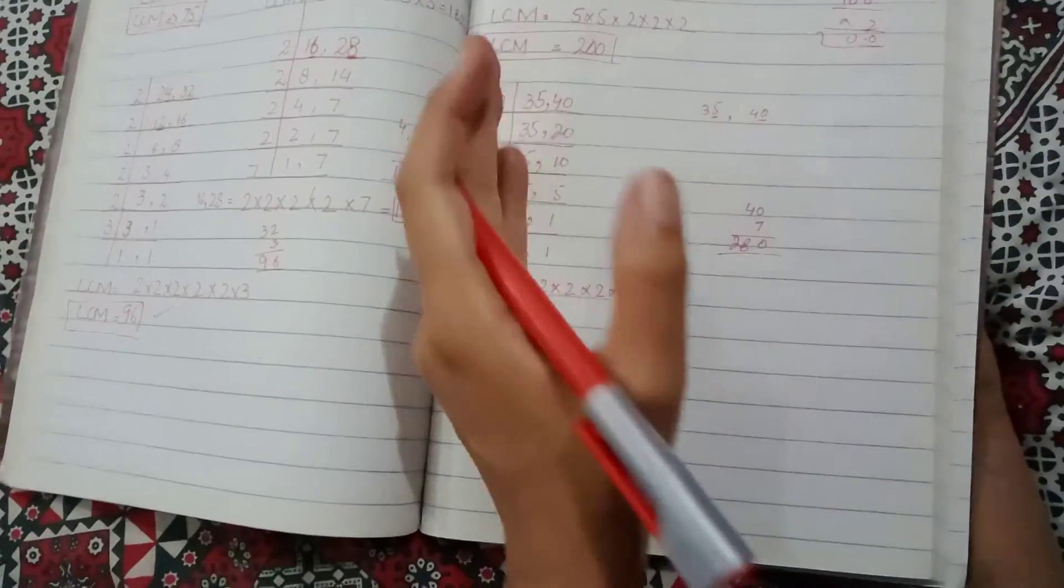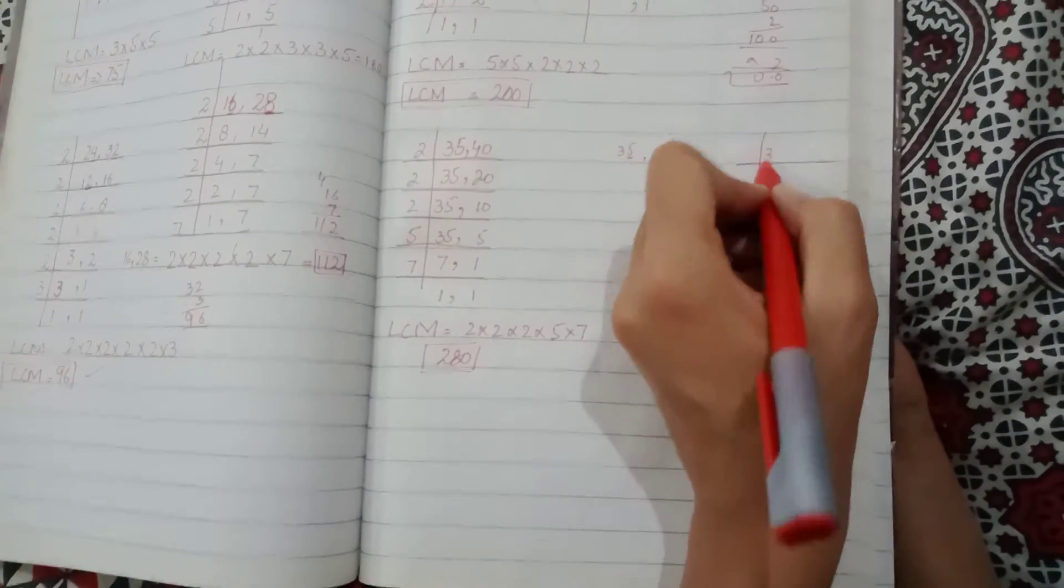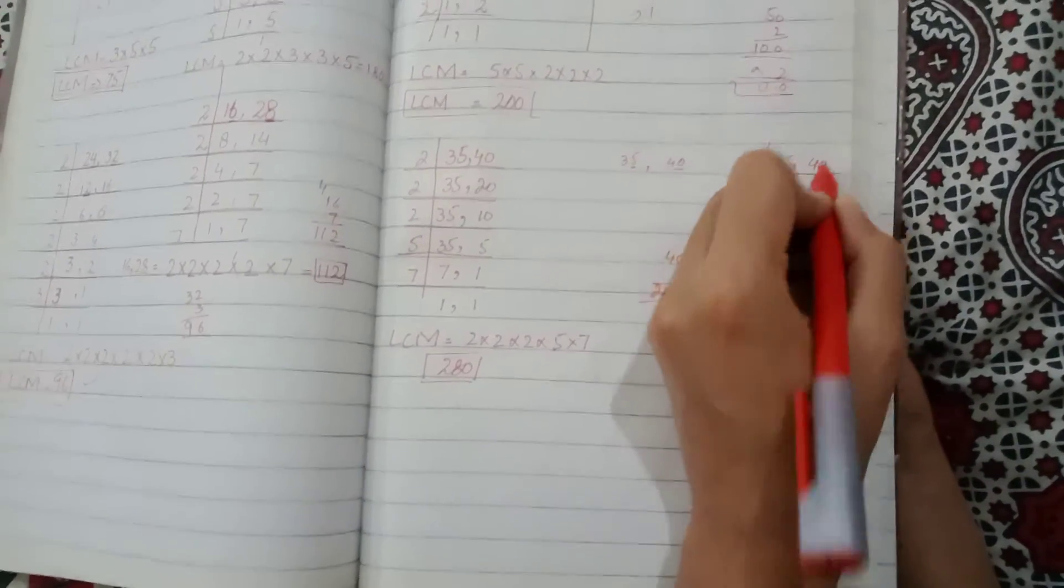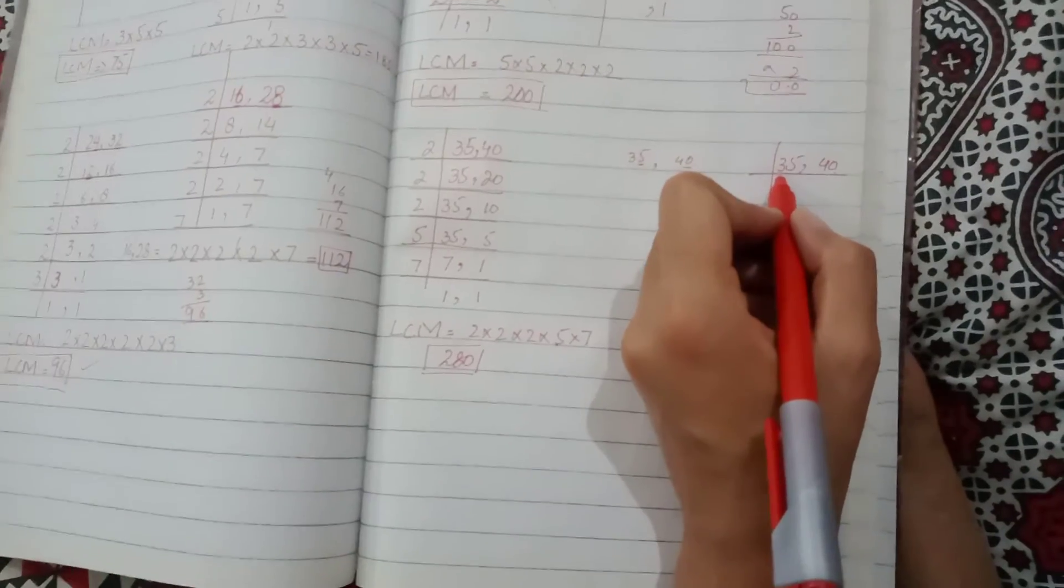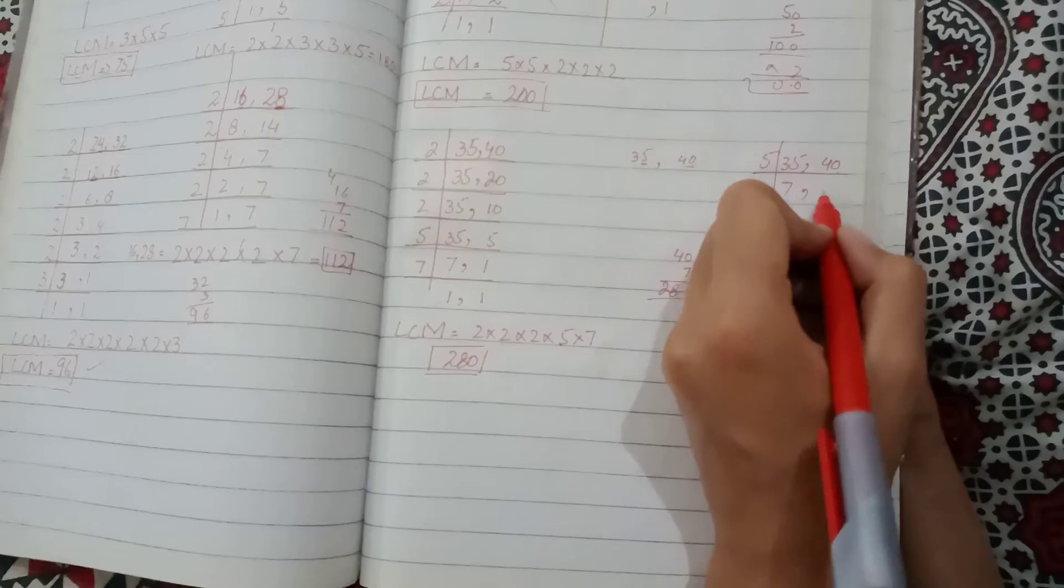This is another method that I can do here. Look at this. These two numbers are divisible by 5. Let's start with 5. 5 into 7 is 35, and 5 into 8 is 40.